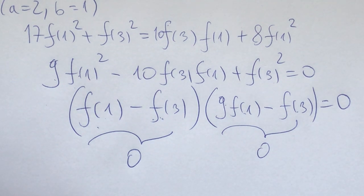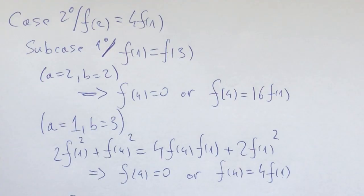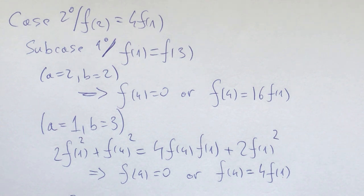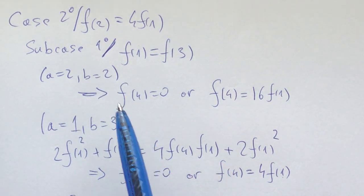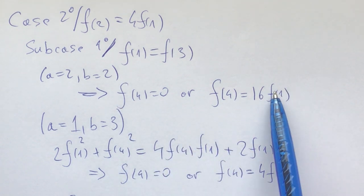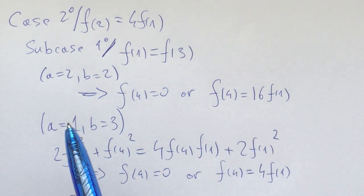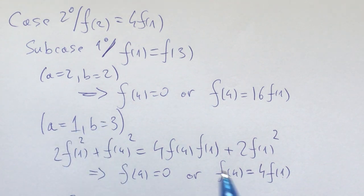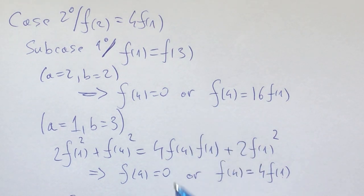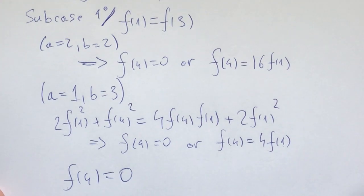I invite you to pause for 10 to 15 minutes and try to solve both of these cases. Let's start with sub-case 1: f(1) = f(3). We write f(4) in two different ways — plugging in a = b = 2 gives f(4) = 0 or 16f(1), and plugging in a = 1, b = 3 gives f(4) = 0 or 4f(1). Since both must hold simultaneously, f(4) = 0.